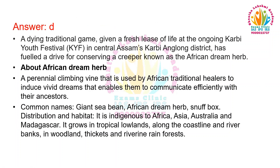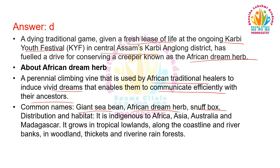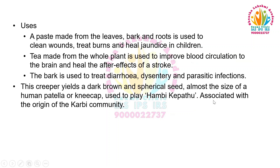A dying traditional game given a fresh lease of life at the ongoing Karbi Youth Festival in Central Assam's Karbi Anglong District has fueled a drive for conserving a creeper known as the African Dream Heart. It is a perennial climbing vine used by African traditional healers to induce vivid dreams that enable them to communicate with their ancestors. Common names include Giant Sea Bean, African Dream Heart, and Snuff Box. It is indigenous to Africa, Asia, Australia and Madagascar, and grows in the tropical lowlands along the coastline and river banks in woodland, thickets and riverine rainforest.